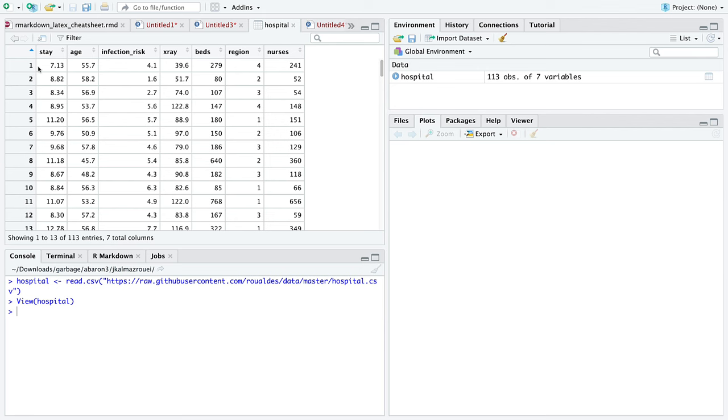And the dataset consists of one hospital's data, where this 7.13 is the average stay of all the patients in this one particular hospital. This variable age is the average age of all the patients in this one particular hospital. And x-rays is an average. Beds is a sum, the count of the number of beds in the hospital. Region is a variable that indicates where the hospital is located, separated into four regions in the U.S. And then the number of nurses is the number of nurses that work at the hospital.